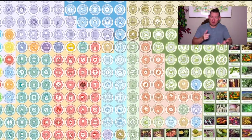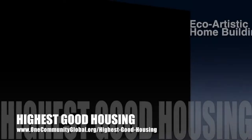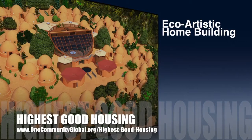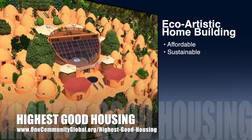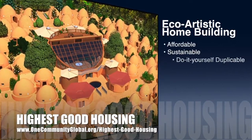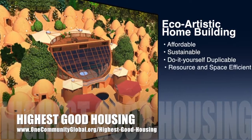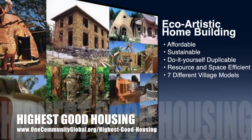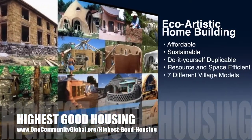One Community's approach to highest good housing is eco-artistic home building that is affordable, sustainable, do-it-yourself, duplicable, resource and space efficient, and consists of seven different sustainably constructed village models.